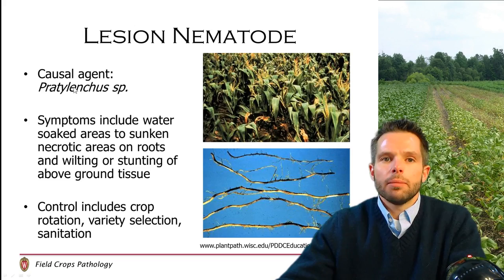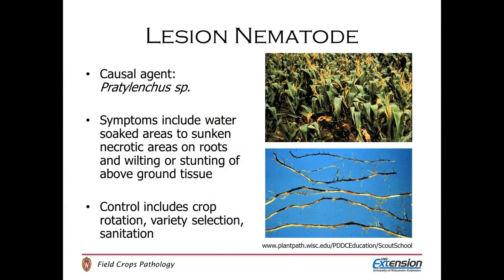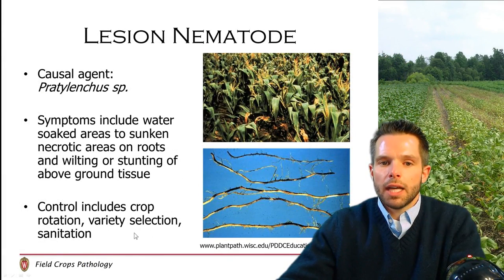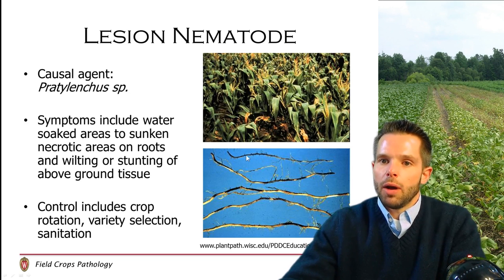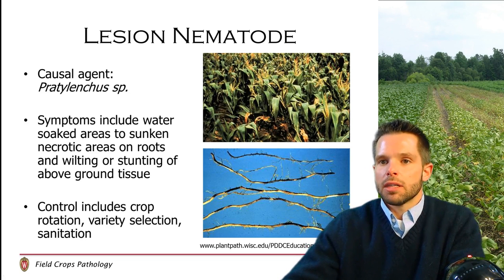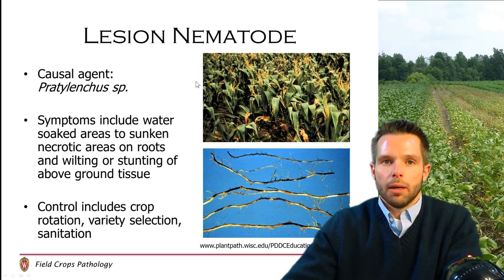Working down the plant to the root system, nematodes can be an issue on corn as well, primarily lesion nematode caused by several Pratylenchus species. Symptoms include water soaking and lesions on root systems, so if you're scouting fields with poor growth in certain areas, you might pull up some plants and inspect the root systems. Affected corn plants will often be stunted and off-color because root systems have been compromised. Control includes crop rotation, variety selection, and sanitation — not fungicide sprays, since we're dealing with a nematode. Good records and planning prior to planting are essential.